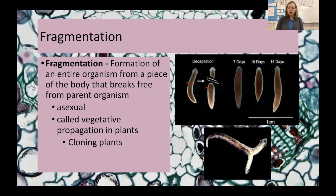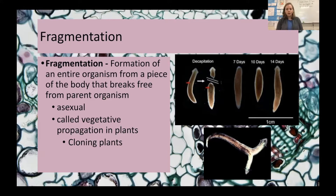Unfortunately, bananas are going through something called Panama disease, which affects banana trees viciously. Once it gets into a crop, it will wipe out that crop. Since bananas are reproduced asexually, they're all genetically identical — if Panama disease can kill one banana, it can kill them all. It has already decimated crops in Australia and is now working its way toward Central and South America, putting the banana trade in real danger.